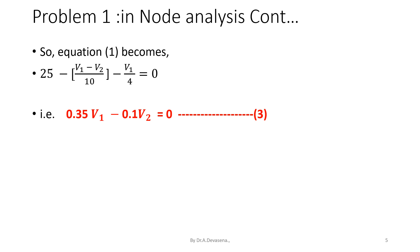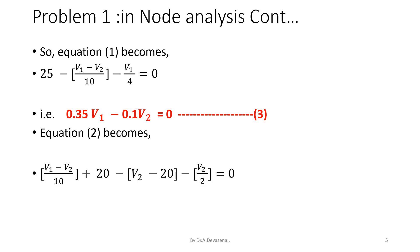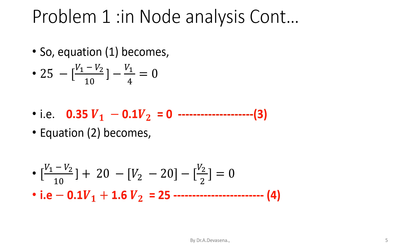Now substitute the values of the currents I1, I2, I3, and I4 in equation 2. So, equation 2 becomes V1 minus V2 by 10 plus 20 minus V2 minus 20 minus V2 by 2, that is equal to 0. If we simplify this equation, we get minus 0.1V1 plus 1.6V2 is equal to 25.